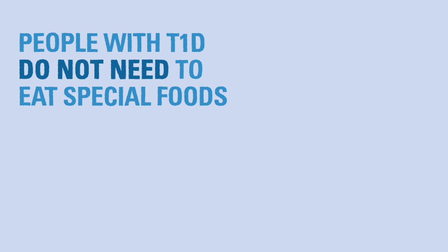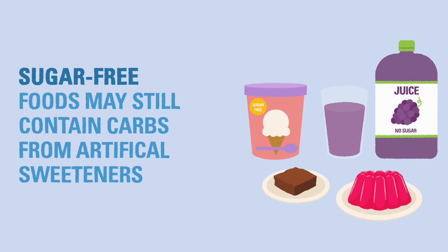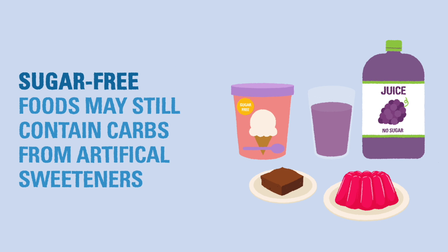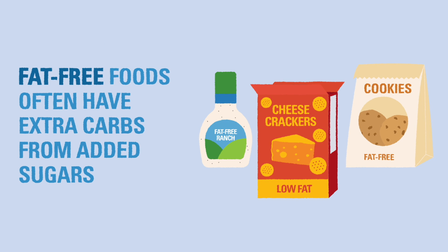People living with T1D do not need to be on a special diet or eat special foods, but certain foods can change the way blood glucose is affected. Sugar-free foods may still contain carbs in the form of artificial sweeteners or sugar alcohols, which can still raise blood glucose but not as fast as regular carbohydrates. Fat-free foods may have higher amounts of carbohydrates than regular-fat foods because they are filled with added sugars to compensate for the lack of fats.